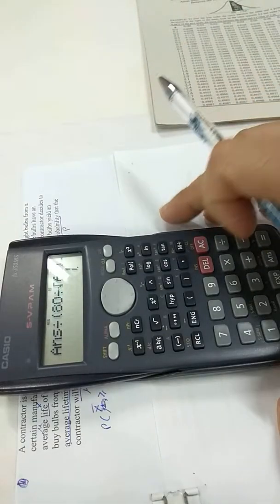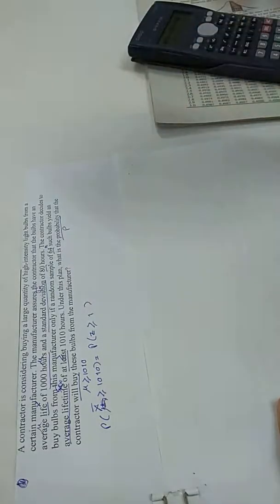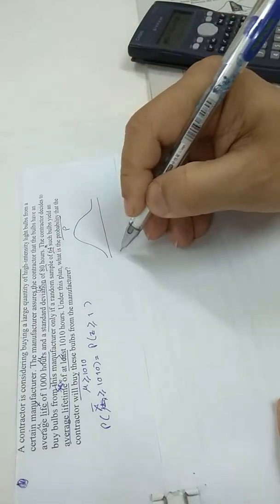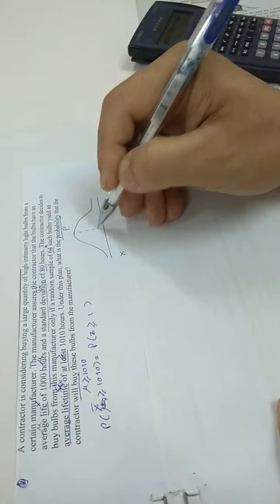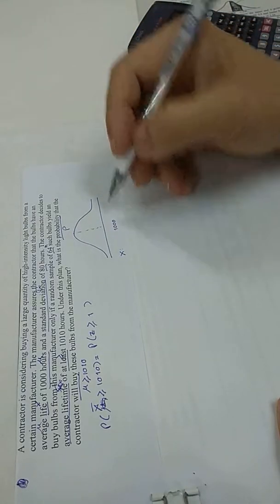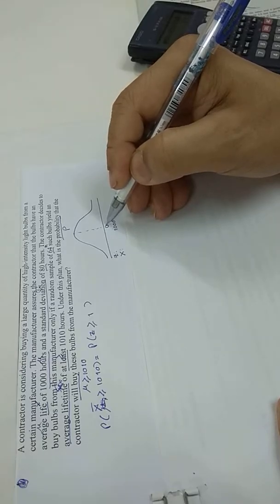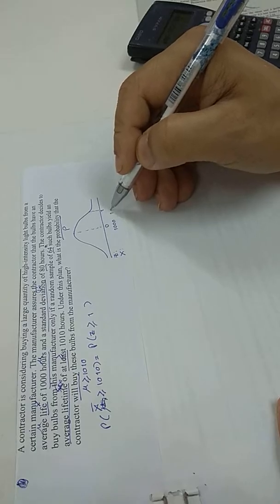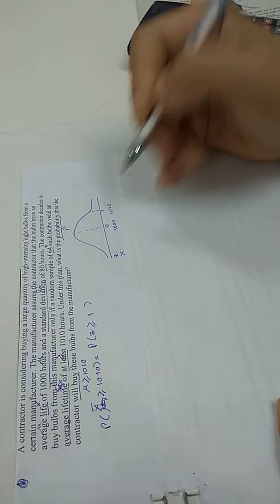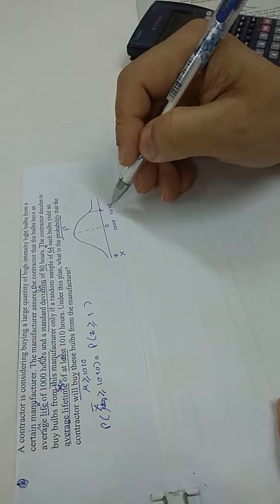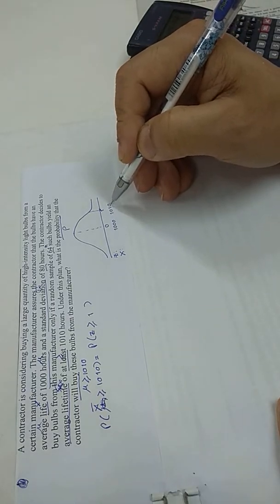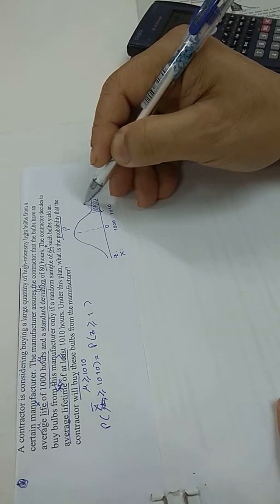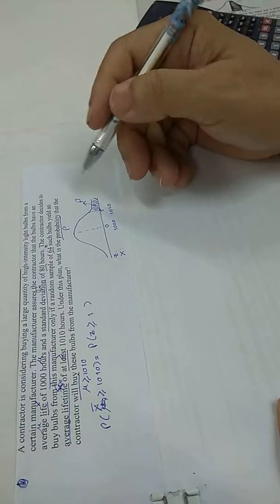This will be 1. So draw the diagram. If the line is X, the mean is 1000. If the line represents Z score, the mean is 0. Here 1 on X, this is 1010. So if the mean life is 1010 or more, that means Z score is 1 or more. What is the probability? This area is the probability. What is the area? Let's read the table.